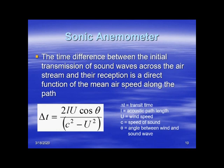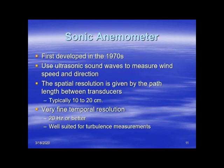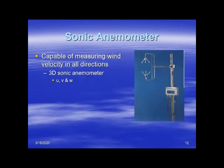Sonic anemometers were first developed back in the 1970s. They have very good spatial resolution, typically on the order of 10 to 20 centimeters, and very good temporal resolution — getting observations about 20 times per second — so they can be used for turbulence measurements. Sonic anemometers can measure three-dimensional wind: not only the two-dimensional east-west, north-south wind, but also the vertical wind speed.